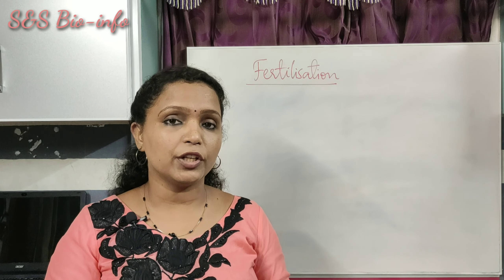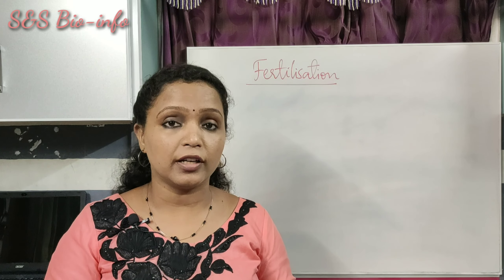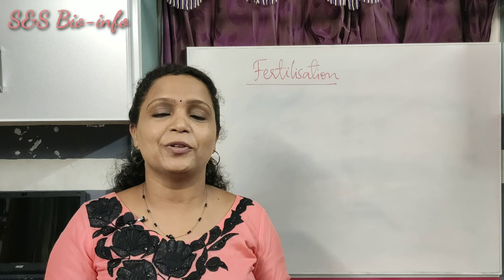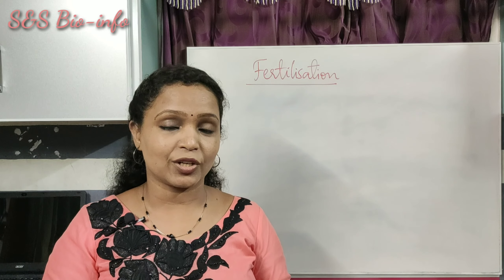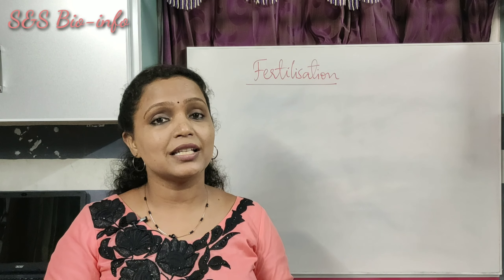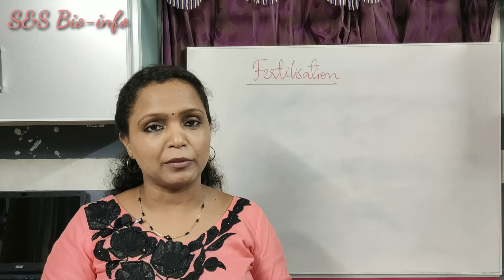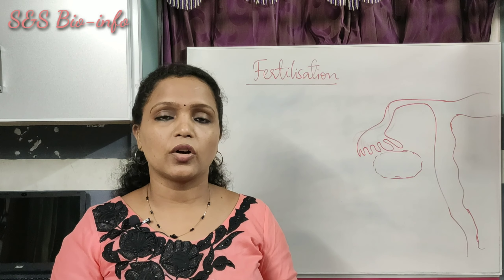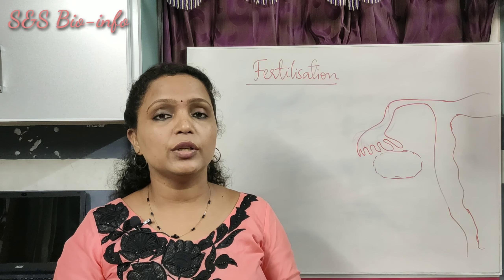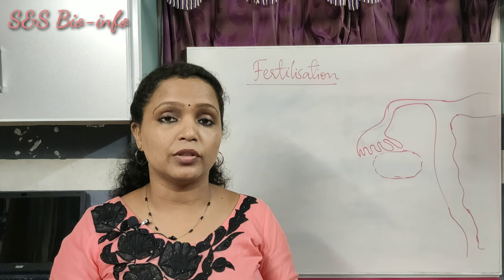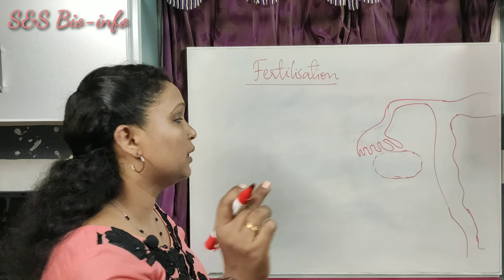How is a zygote formed in the human body? It is formed by the fusion of a haploid female gamete with a haploid male gamete. Fertilization is the fusion of a male gamete and a female gamete which results in a diploid structure called the zygote. The zygote is a single-cell structure. During coitus or copulation, the semen or seminal plasma is introduced into the female reproductive system through the vaginal opening — that process is called insemination.